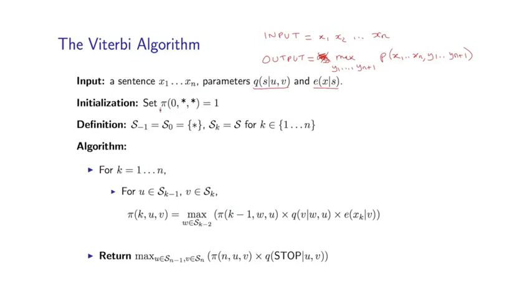The initialization step is to set pi zero star star equals 1. Remember that was the base case of the recursion that I showed you. And then we have these definitions where s sub k is the set of possible tags at position k. So s minus 1 is s0 is equal to the star symbol, reflecting the fact that I can only have the star symbol at positions minus 1 or 0. And everywhere else sk equals s where this is the set of tags. For example we might have D, N, V, P as the set of possible tags.